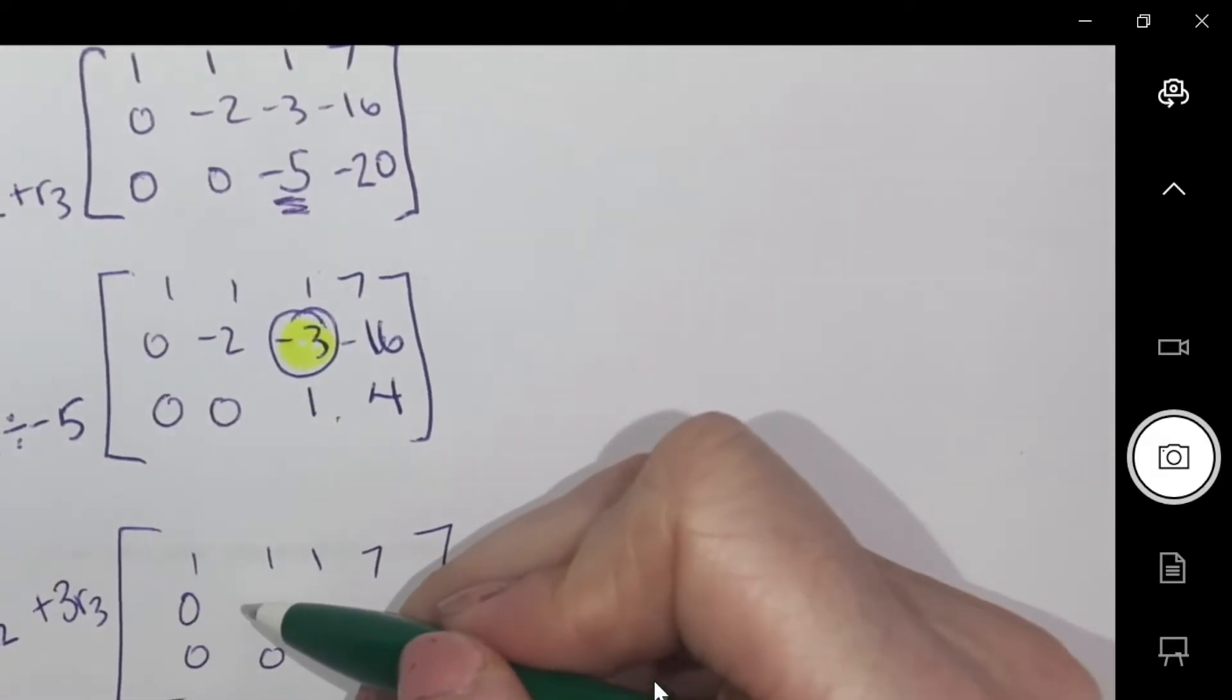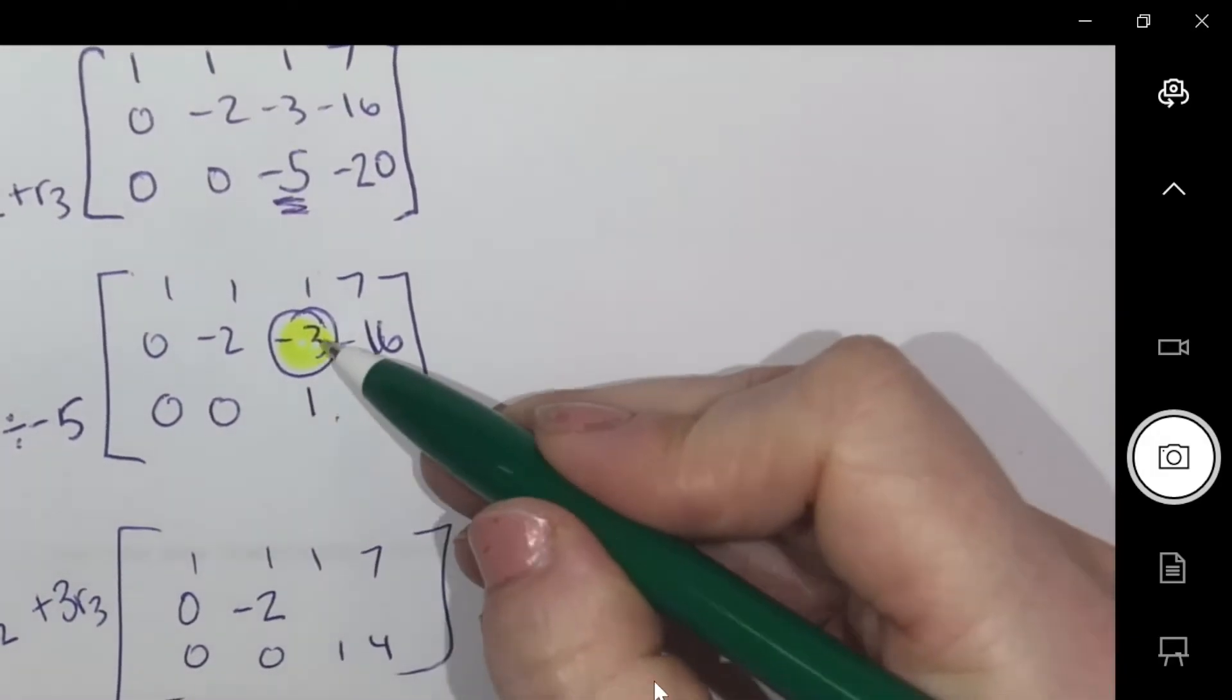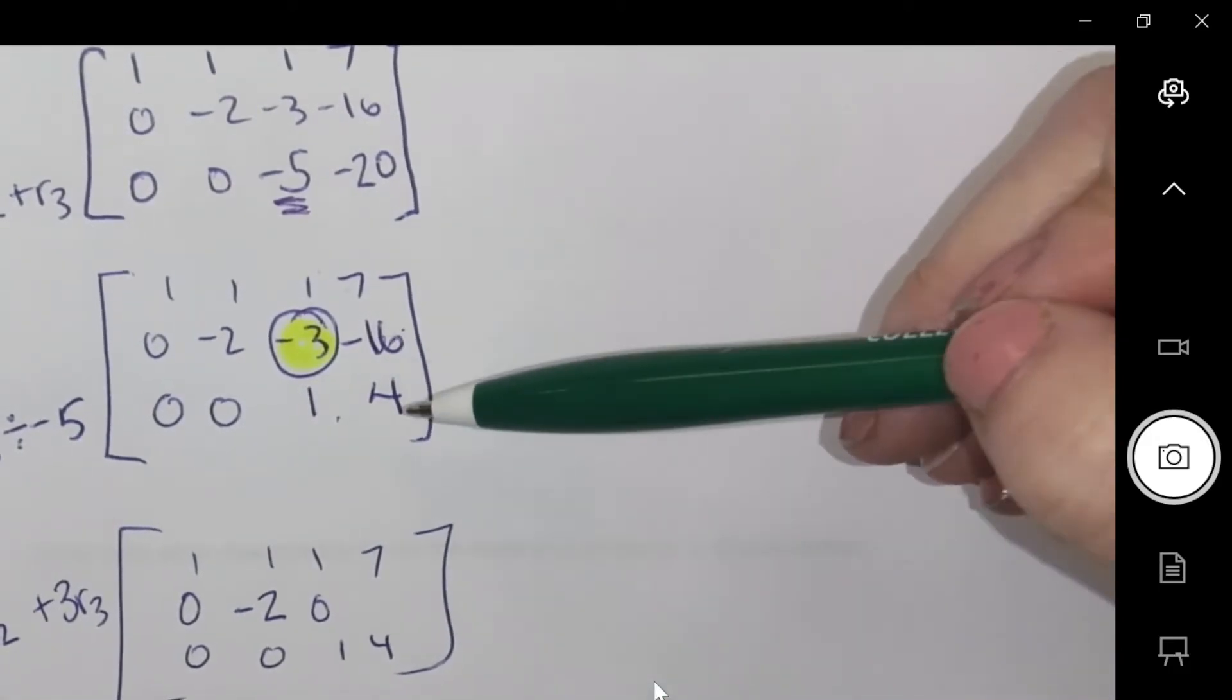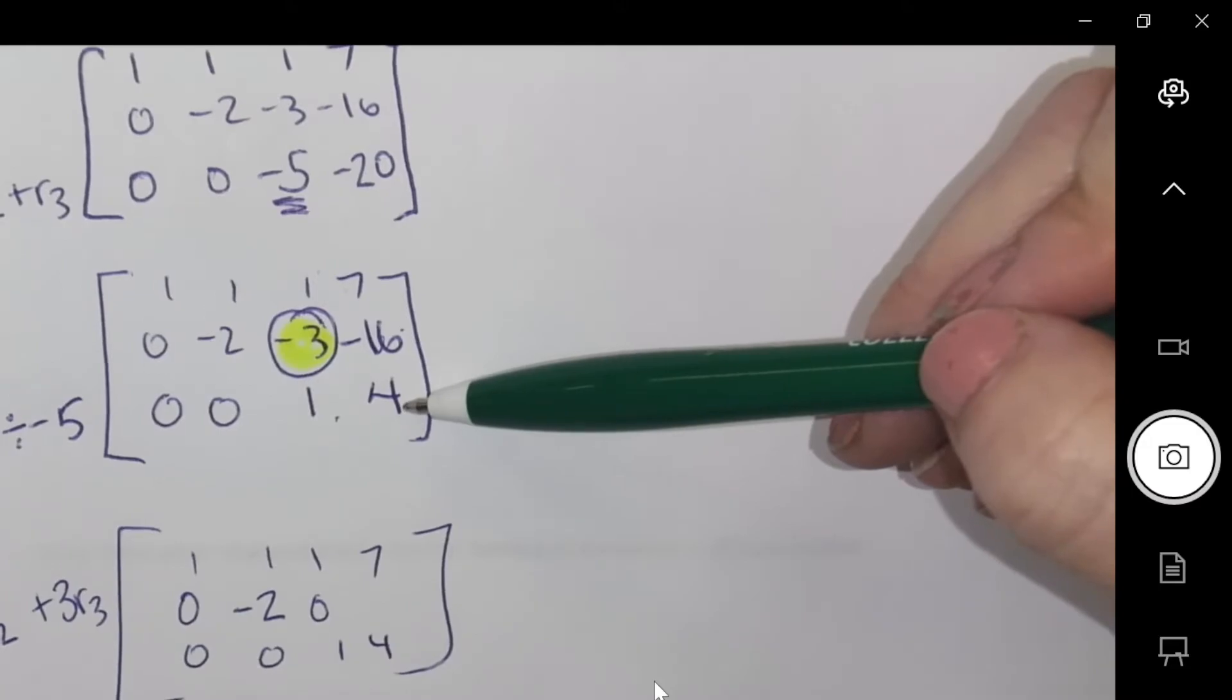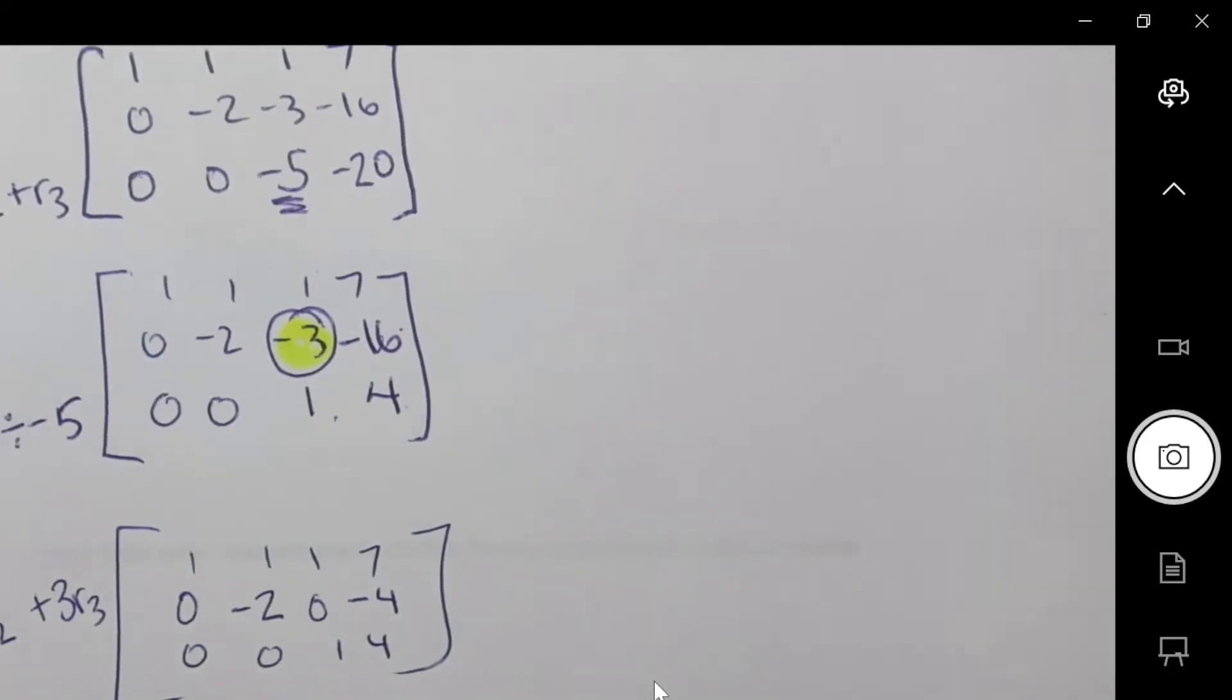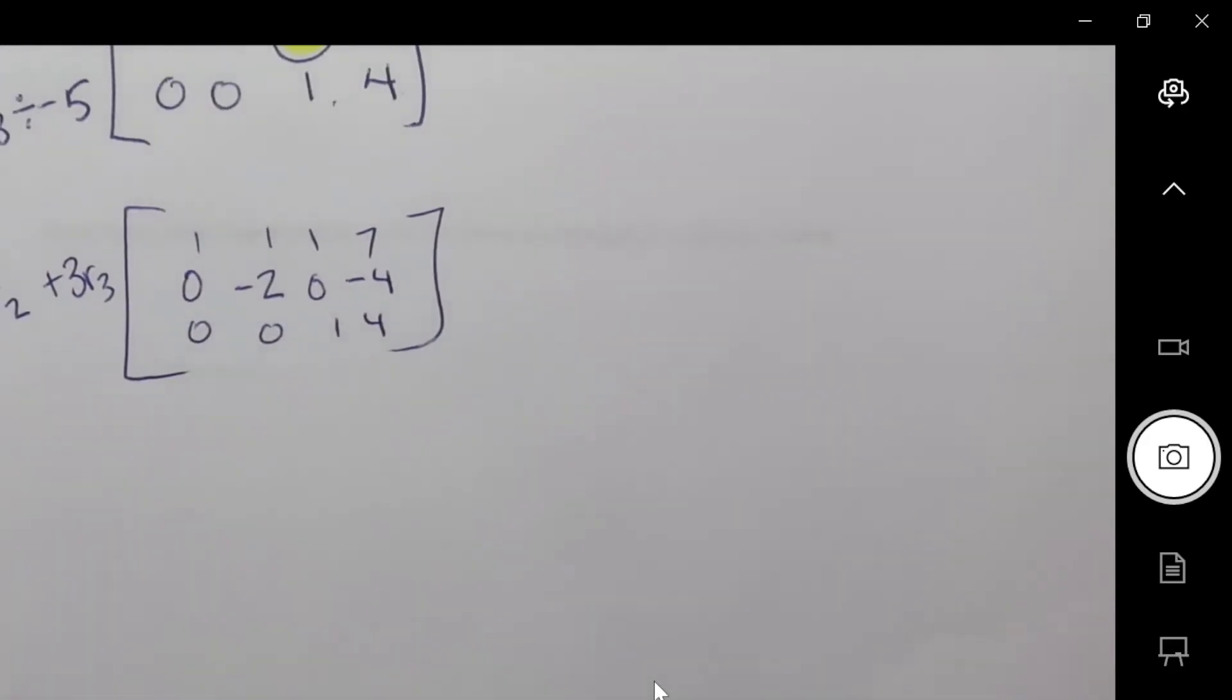Okay. We're going to go row two plus three row threes. See where I'm getting that from. This plus three of those makes zero. So zero, negative two, zero, negative sixteen plus three fours. So plus twelve is negative four. Okay. I'm back to my little cheat sheet here.